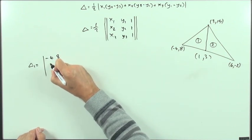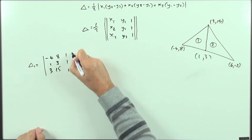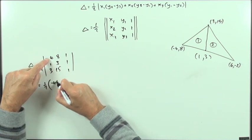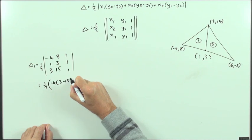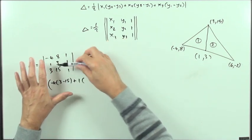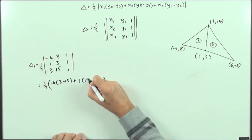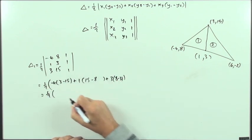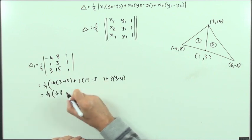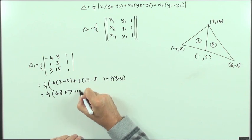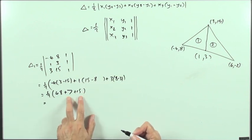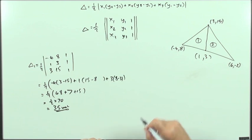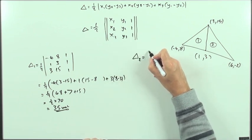For triangle one, I'll put down the determinant without the absolute value unless it turns out negative. The coordinates give: negative 4, 8, 1 / 3, 3, 1 / 5, 15, 1. Taking one half, and expanding along the first column: negative 4 times (3 minus 15), plus 1 times (15 minus 8), plus 3 times (8 minus 3). That's negative 4 times negative 12, plus 7, plus 15 — which is 48 plus 7 plus 15 = 70.